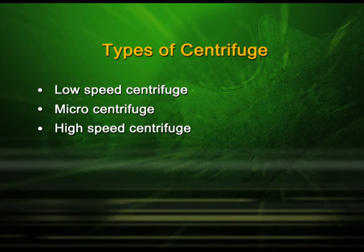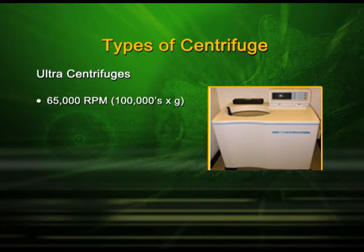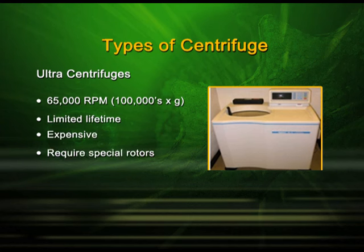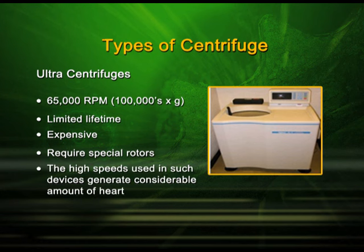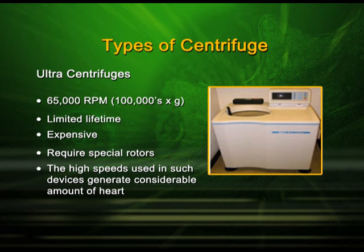The last type of centrifuge is the ultra centrifuge. It was discovered by Theodor Svedberg and runs at a very high RPM of around 65,000. It has a limited lifetime, is very expensive, and requires a special rotor. Because it runs at very high speed, excess heat is generated, and therefore a cooling arrangement is also required.